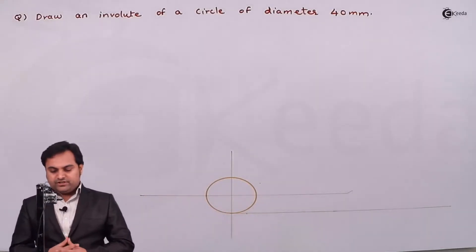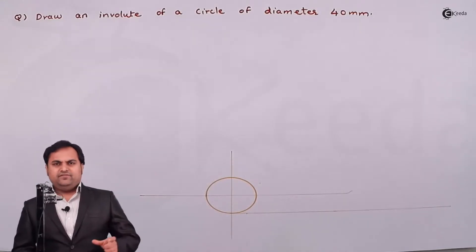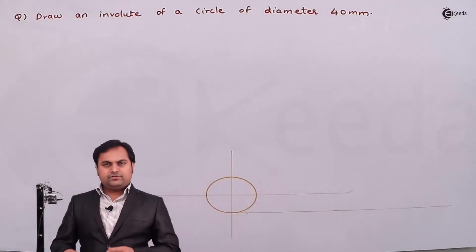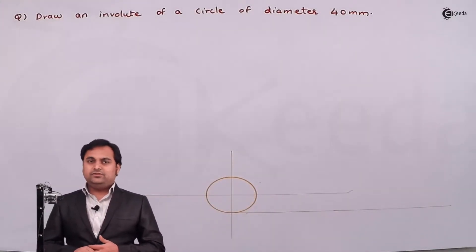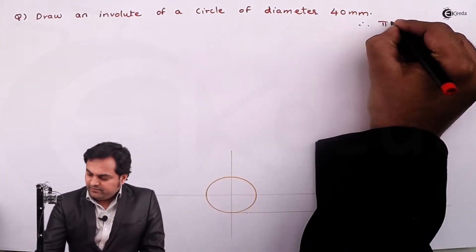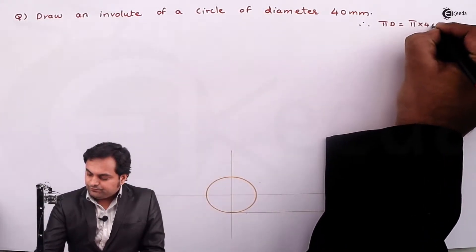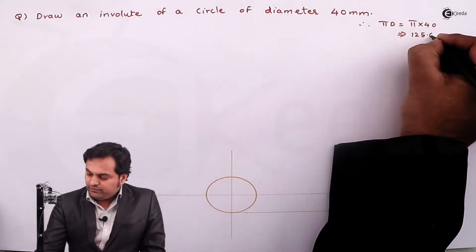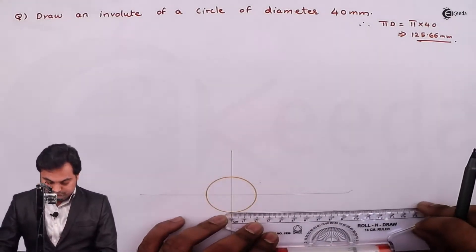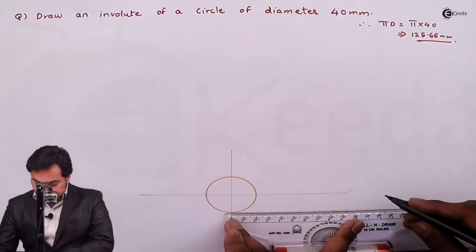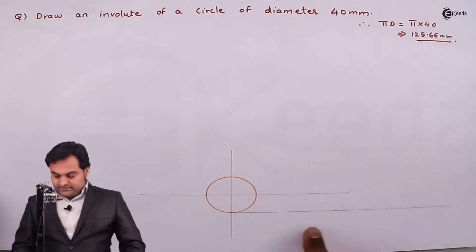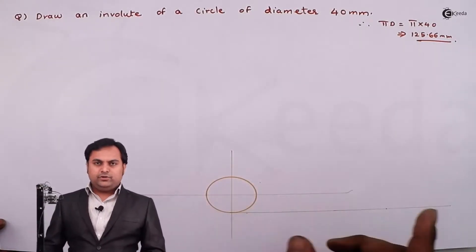In this case, drawing the involute for a circle of diameter 40mm. The length of the string is not given, so the string length equals the circumference of the circle. The circumference is πD = π × 40 = 125.66mm. Here I'll measure that circumference of 125.66mm.